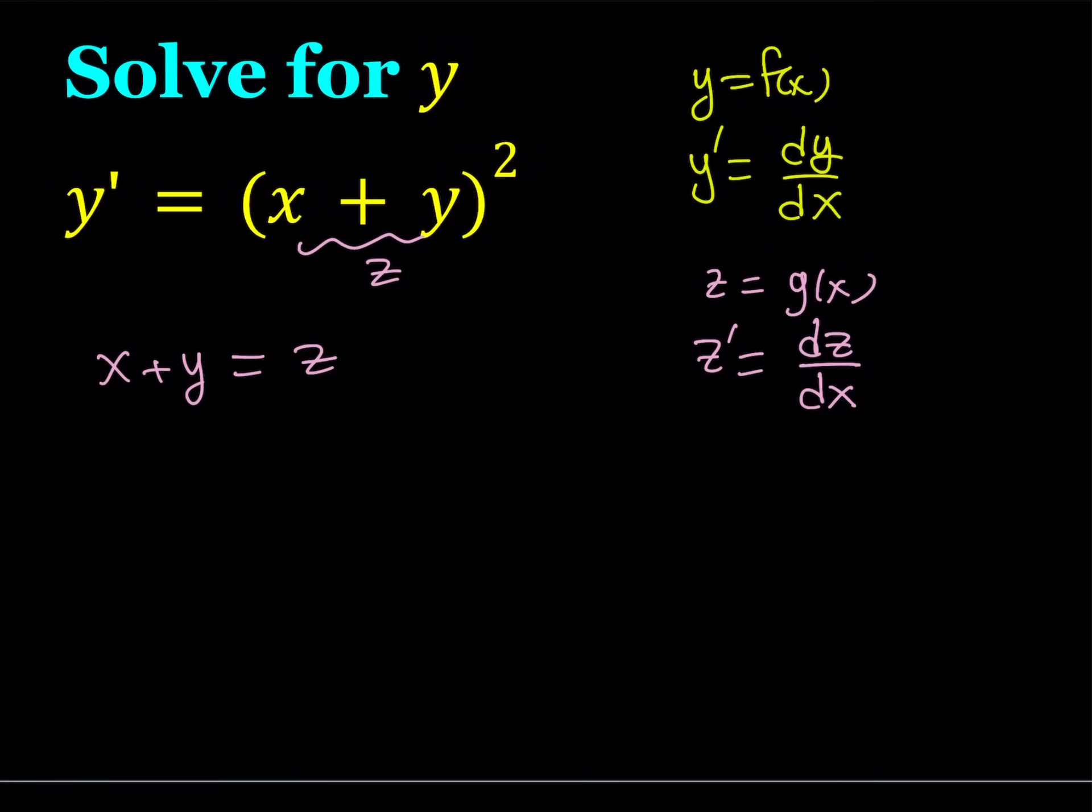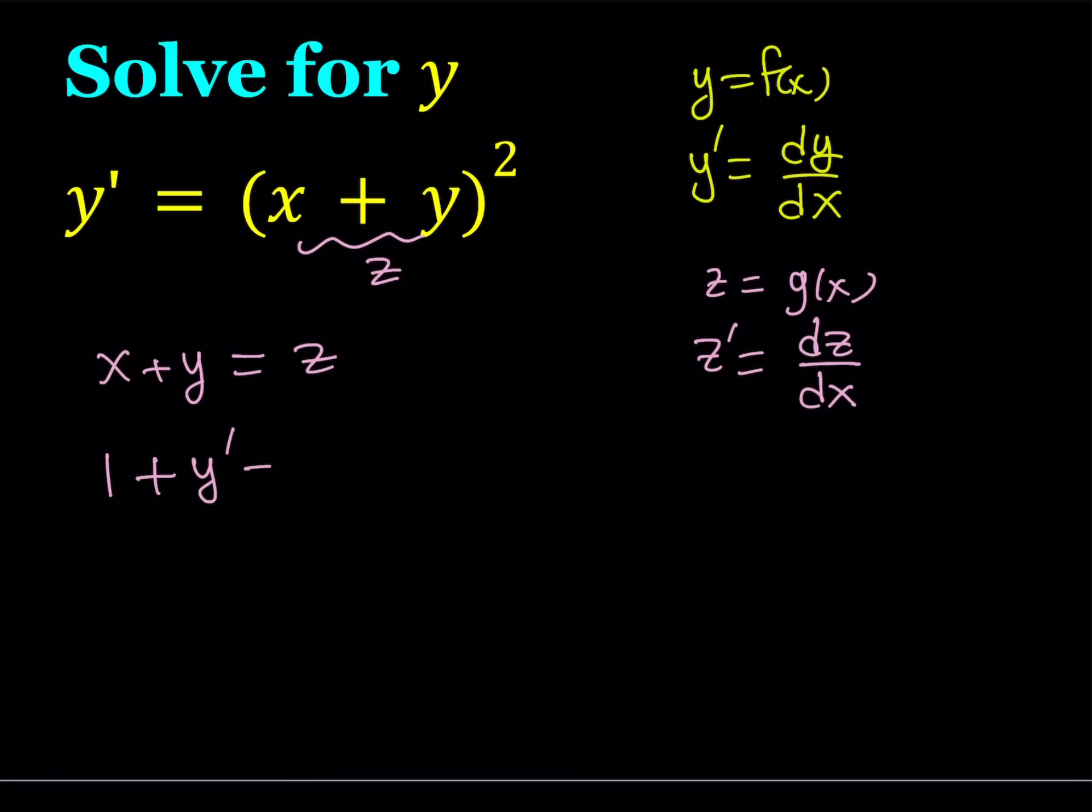So when we differentiate both sides, the derivative of x, and again, everything is differentiated with respect to x. So the derivative of x with respect to x is just one, and then derivative of y is just going to be y prime, and the derivative of z is going to be z prime. Now, let's go ahead and explain what this means.